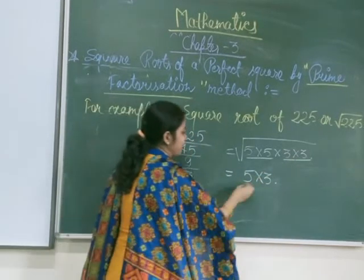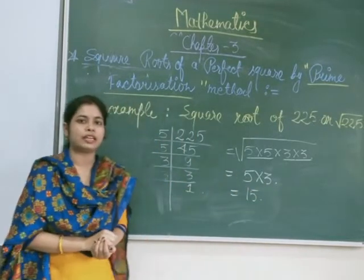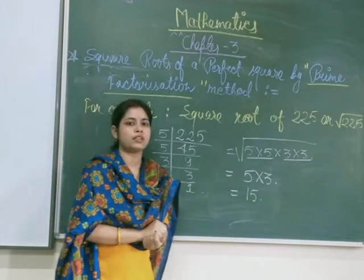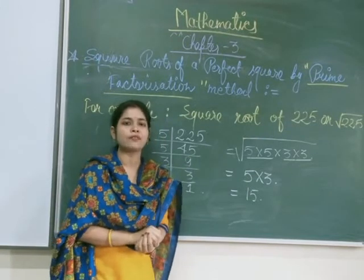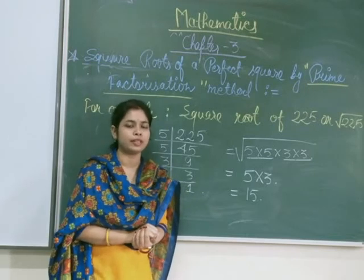Now, on multiplying 5 × 3, what we get? 15. So, we can say that square root of 225 is 15. So, this is the prime factorization method for finding square root of any number. Okay? Thank you.